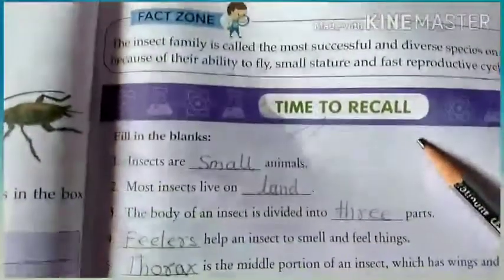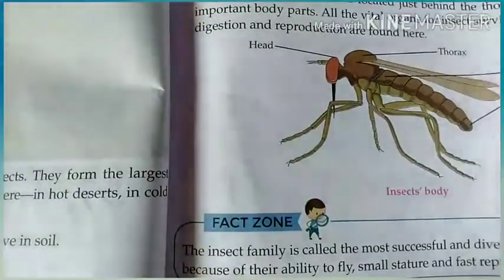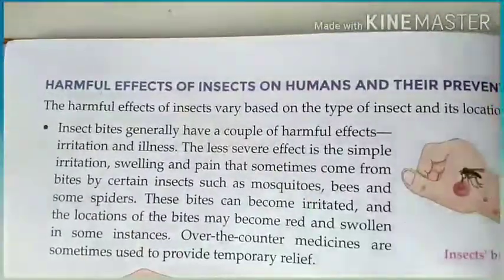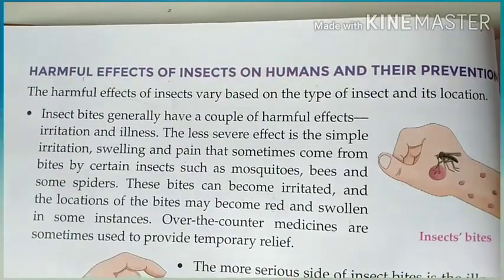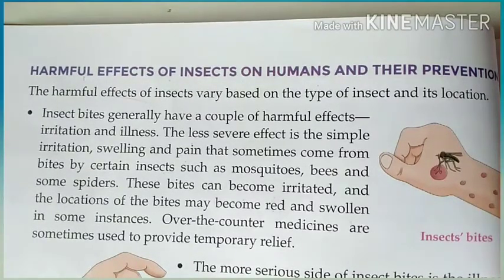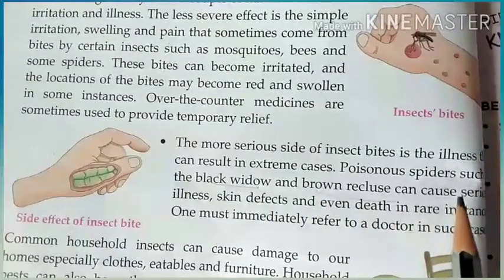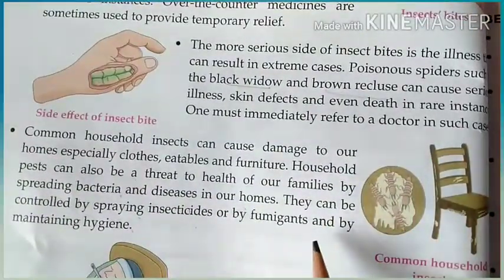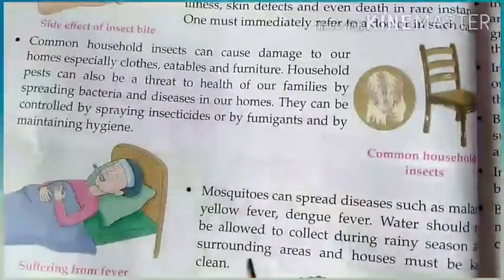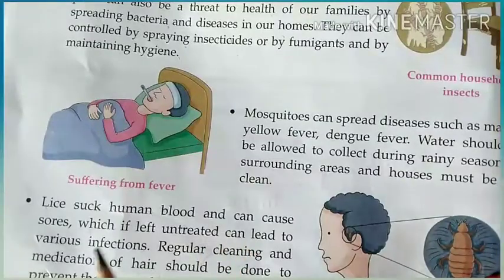We have completed the fill-in-the-blanks section. Now let's turn the page. In the second part, we covered the harmful effects of insects on humans and their prevention. Insects can cause irritation, swelling, and pain — like mosquito bites. Some can be very serious: black widow and brown recluse spiders are poisonous and can even cause death. Some insects like termites damage furniture. Mosquitoes spread diseases like malaria, and lice suck human blood.